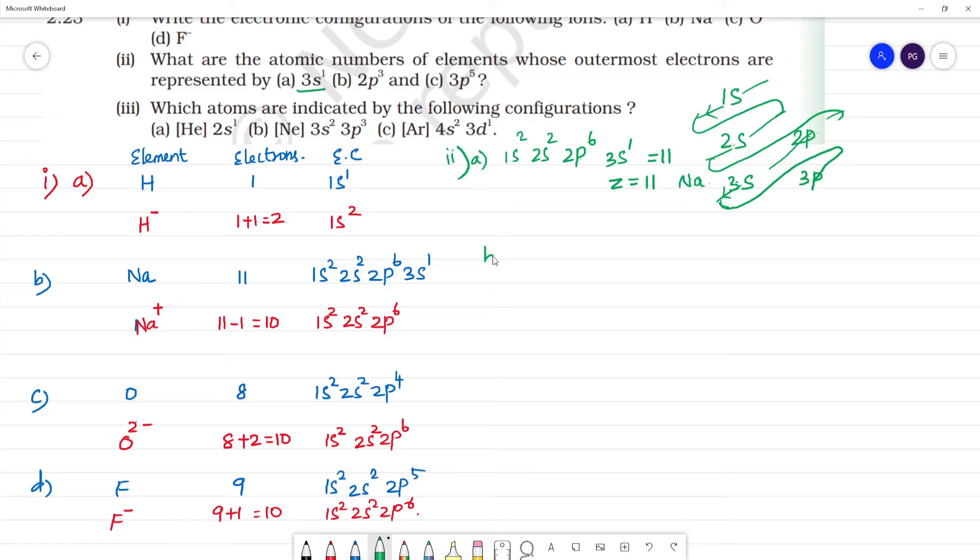Next B, 2p3. The outermost one is 2p3, so we write 1s2, 2s2, 2p3. Total number of electrons is 3 plus 2 plus 2 equals 7. So total number of electrons is 7, atomic number equals 7, and the atom is nitrogen.